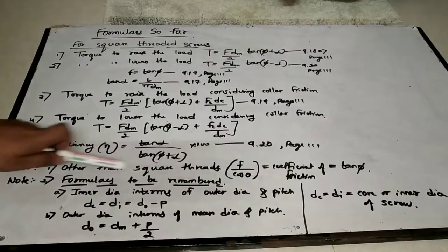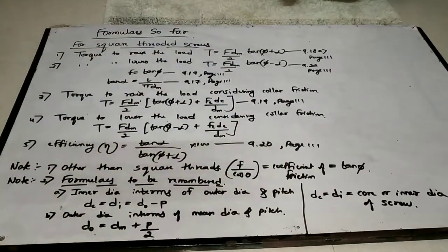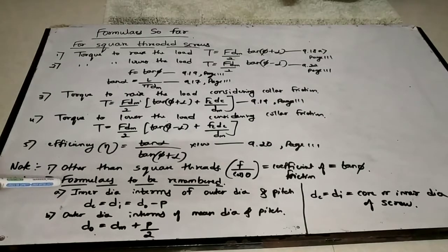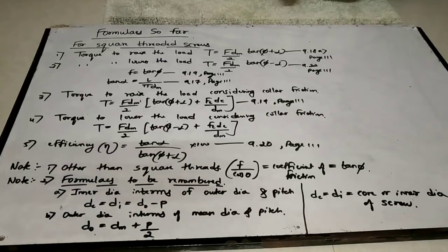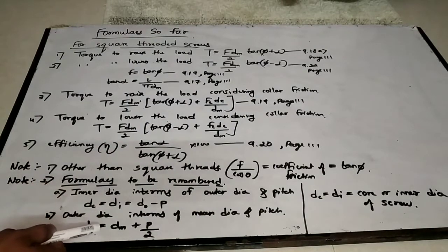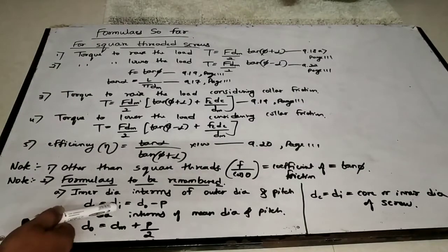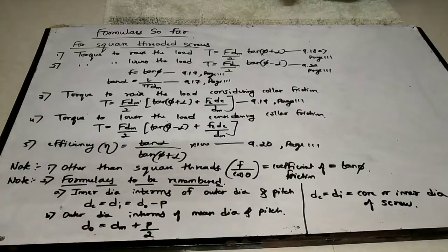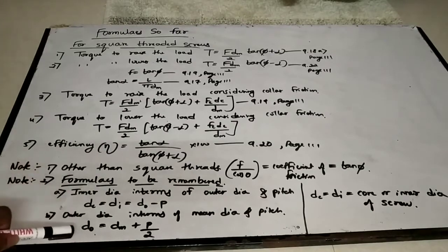Up to here we have covered all these expressions, which you can find in the data handbook. However, in our H.G. Patil data handbook, apart from these, some formulas related to screws are not included — this is Note 2. These expressions you have to remember. They have also been shared in the PDF notes of the power screws theory part in Google Classroom from the previous class.